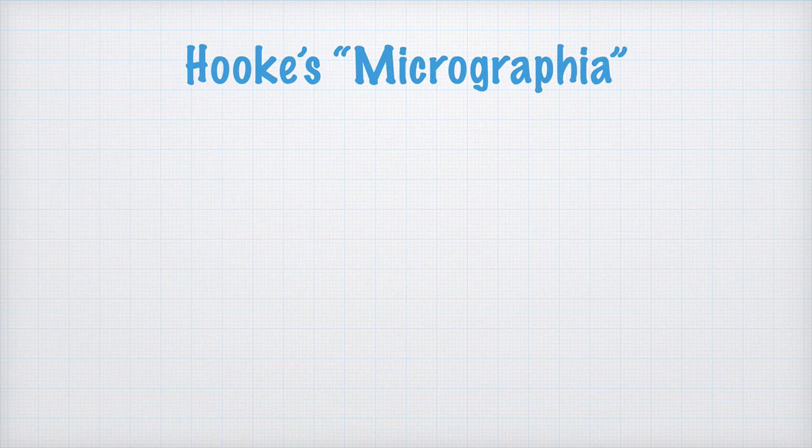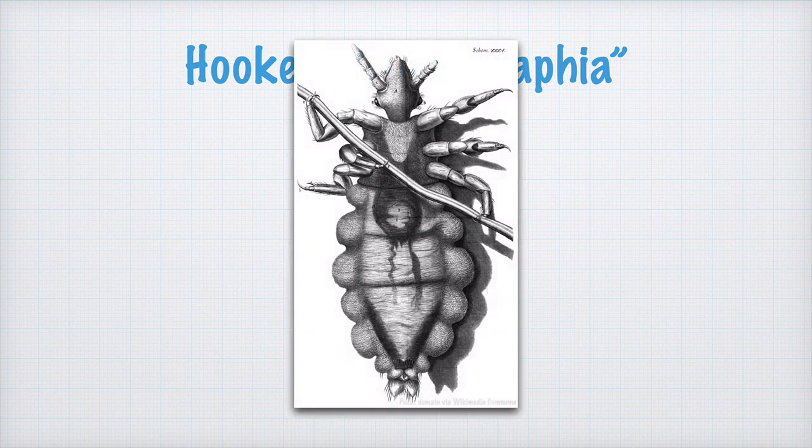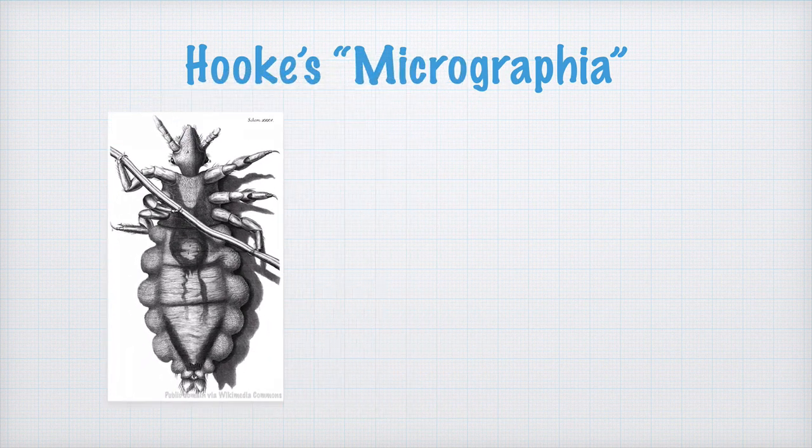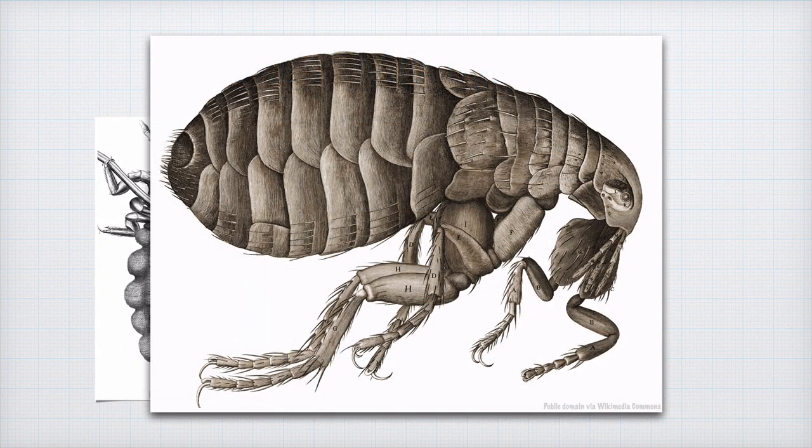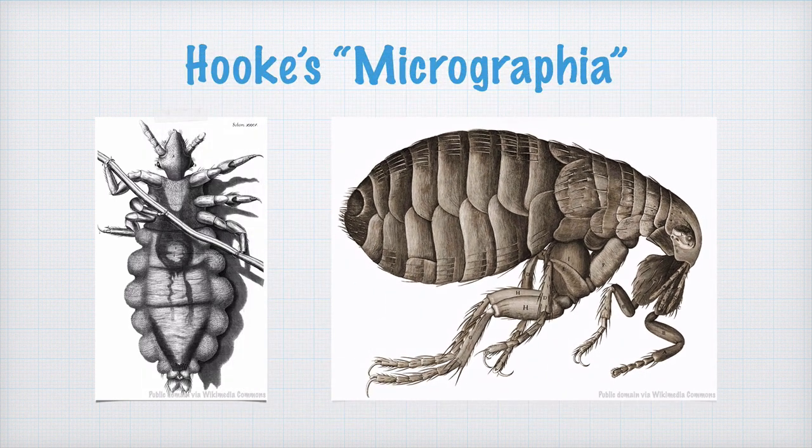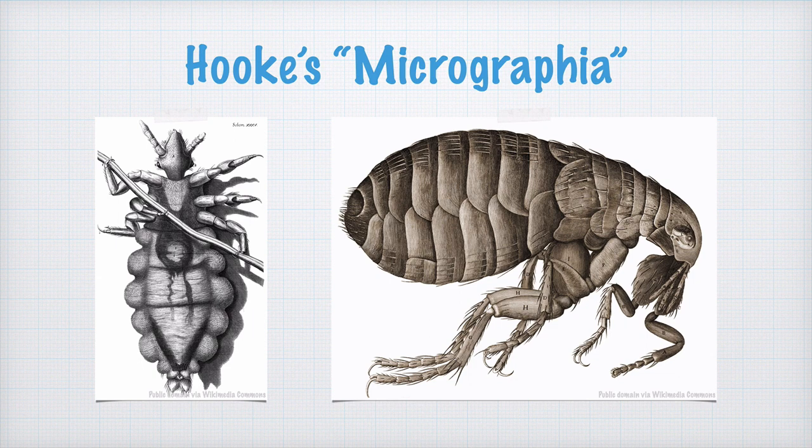Hooke also drew what he saw. Fortunately, he was a skilled artist. Just look at this drawing of the underside of a louse, and take a look at this amazing drawing of a flea. Hooke published his findings in a book called Micrographia, which was a huge success. Never before had the small life been described in such exquisite detail.